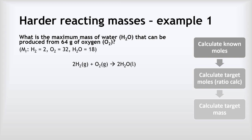Example one: what is the maximum mass of water H2O that can be produced from 64 grams of oxygen? We're going to start by calculating the moles of the known substance, then calculate the moles of our target, and then calculate the mass of that target. Our target is water and our known substance is oxygen because we've been given its mass.